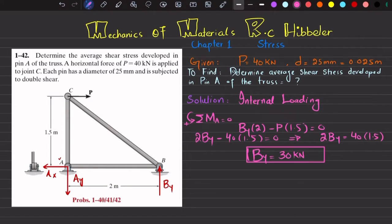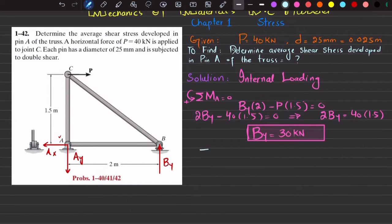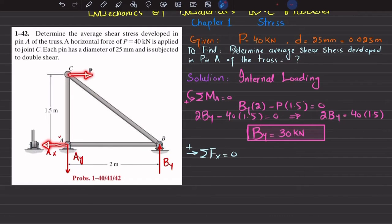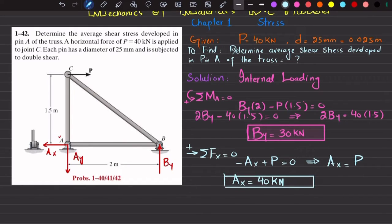Solving: 2·BY = 40 × 1.5, giving BY = 30 kN. Now we find AX. Applying the equation of equilibrium — sum of all horizontal forces equals zero, with the positive direction to the right: −AX + P = 0, so AX = P = 40 kN.